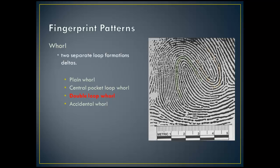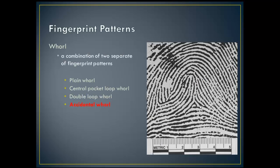Double loop whorls consist of two separate and distinct loop formations with two deltas and one or more ridges which make a complete circuit. When the imaginary line is drawn between the two deltas, at least one recurving ridge within the inner pattern touches the line. An accidental whorl consists of two different types of patterns, with the exception of a plain arch, and has two or more deltas, or a combination of patterns which do not conform to any of the other whorl pattern definitions.